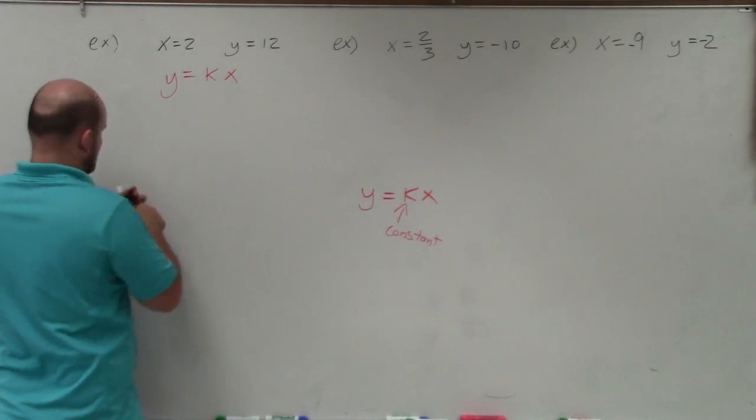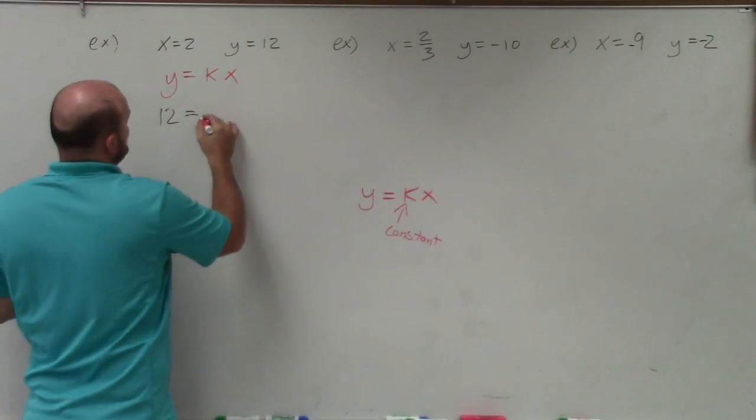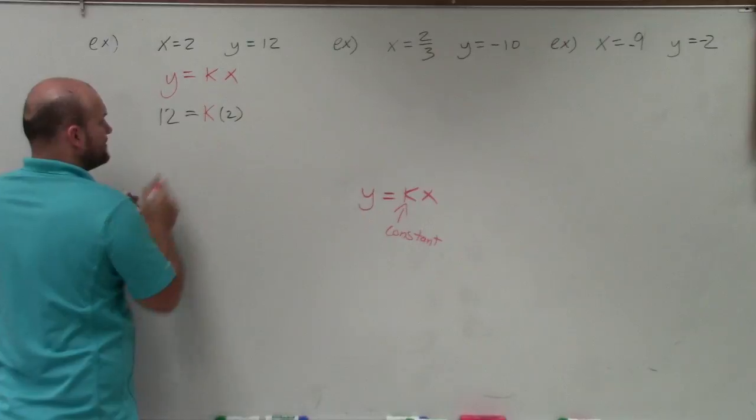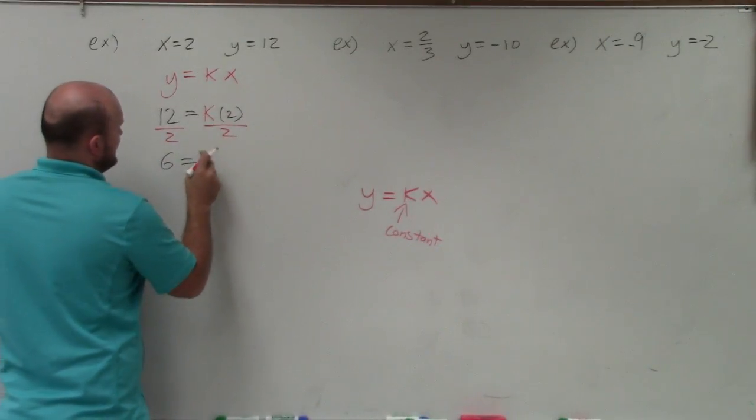Well, if we know what y is, which is 12, and we know what x is, which is 2, then we just plug them in and solve for k. So to solve for k here, I'm going to divide by 2 on both sides. And I get 6 equals k.